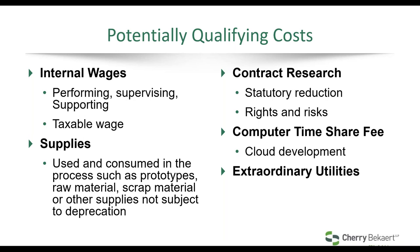The biggest driver of the credit is typically wage costs — the time employees spend doing qualifying research activities. If John Smith spends 50% of his time on qualifying research, we can pick up 50% of his Box 1 W-2 wages. As mentioned, if it's above 80%, we take 100% — usually the biggest driver because it captures the time your employees spend developing or improving products and processes.